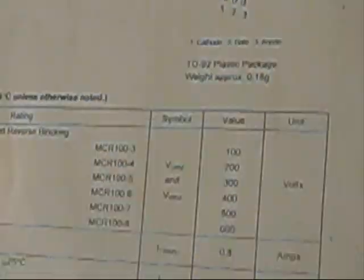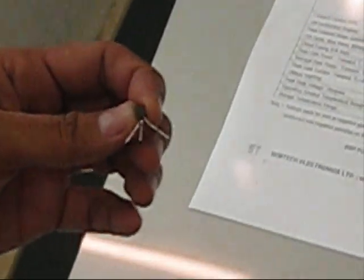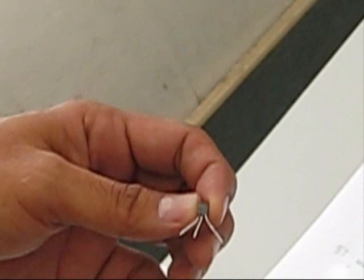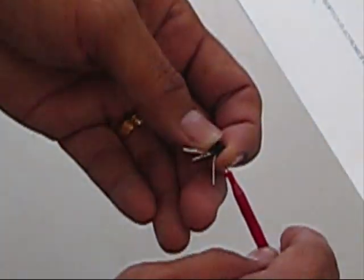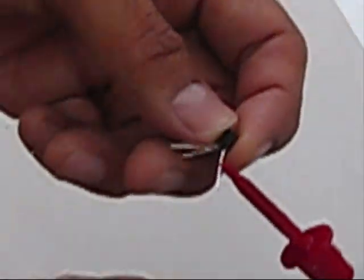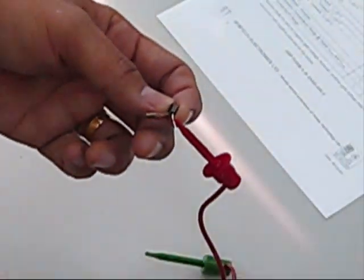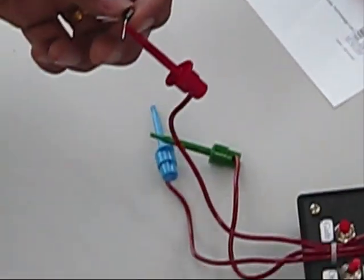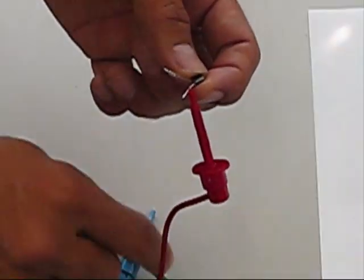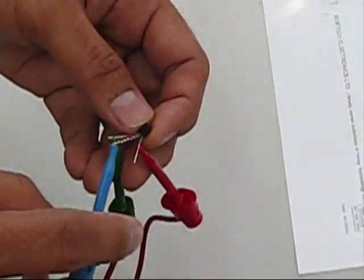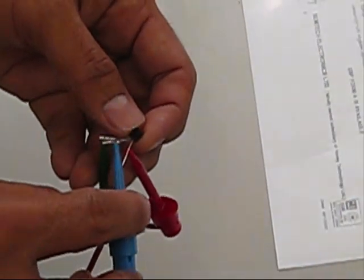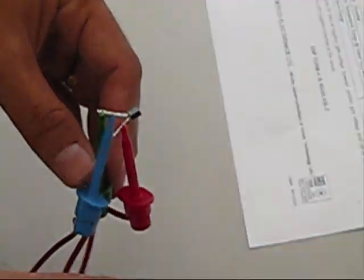Come, let's test and see. Anode is pin number three, so I have to connect the red probe to this one. Then we have the cathode at pin number one. And then we have the gate at the center pin. What you need to do now is to just turn it on.